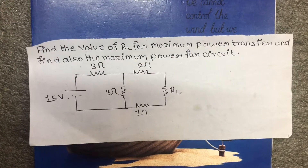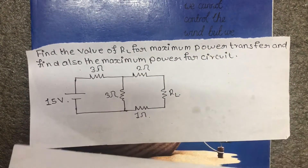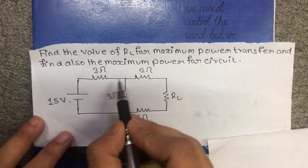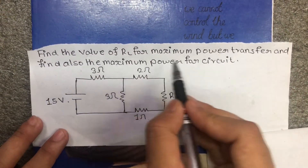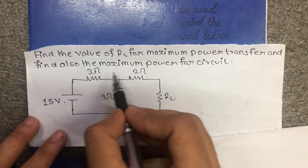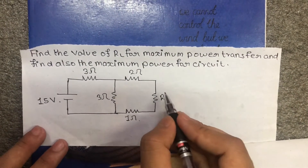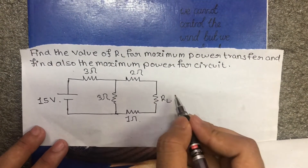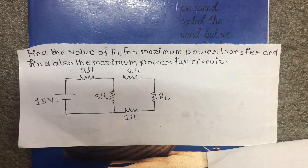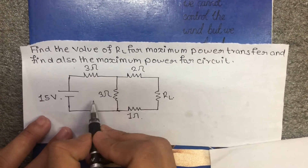Let us now solve an example. The example asks: find the value of RL for maximum power transfer and also find the maximum power for the circuit. We need to find the value of RL and calculate the maximum power transferred, given the circuit with voltage source and RL.